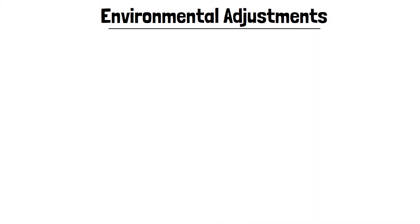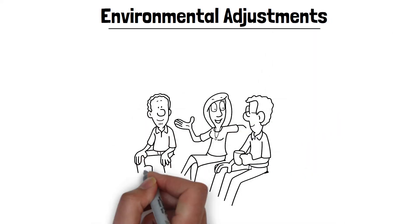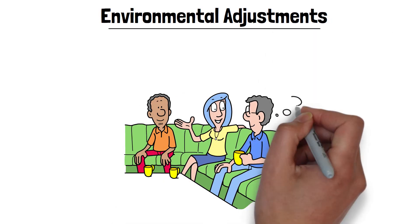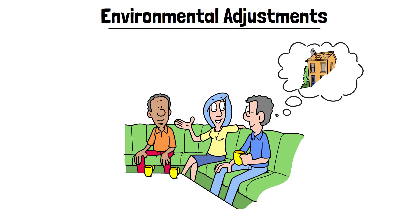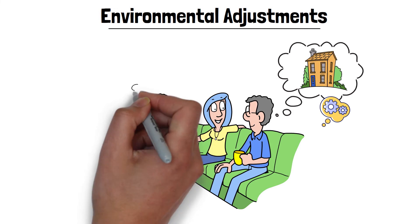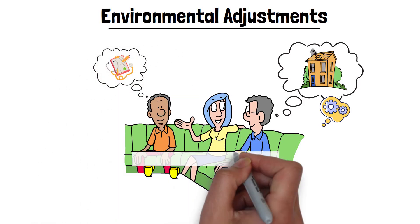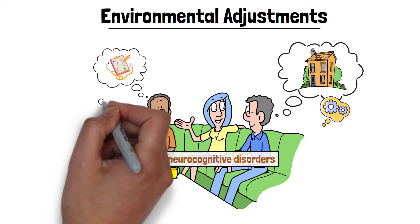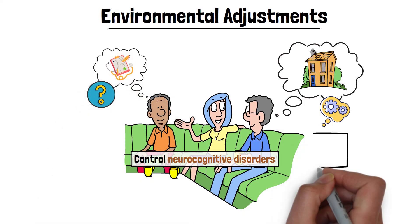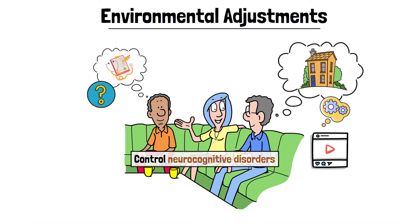Environmental adjustments. Organizing the environment around individuals to make it simple and safe, such as arranging the home to prevent injuries or wandering, is an important measure. Friends, these were some treatments that can manage or control neurocognitive disorders. If you feel any point is missing, please let us know in the comment box so that we can help others and share your strategies too.